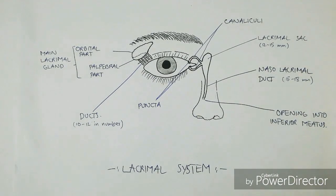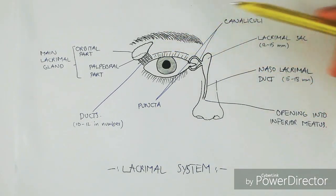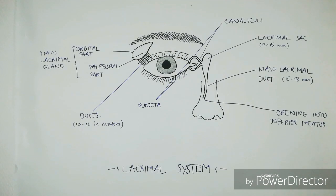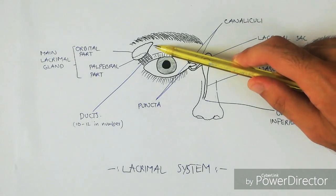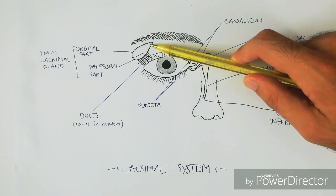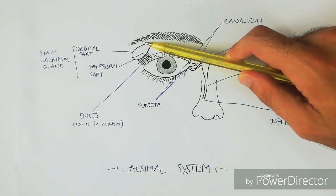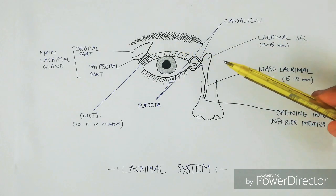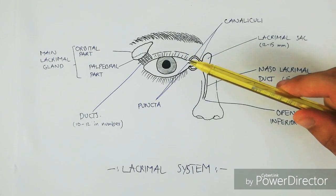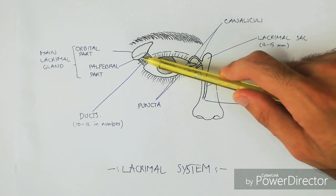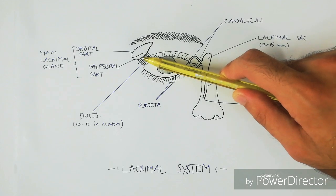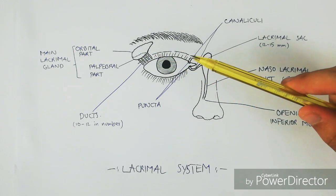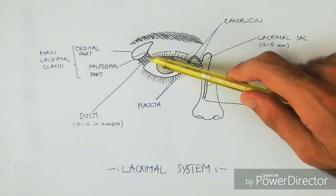The secretory system consists of the main lacrimal gland, shown here, and accessory lacrimal glands. The main lacrimal gland is shaped like an almond and is situated in the fossa for the lacrimal gland at the roof of the orbit. The lacrimal gland is divided into two parts: the upper orbital part and the lower palpebral part, divided by the levator aponeurosis.